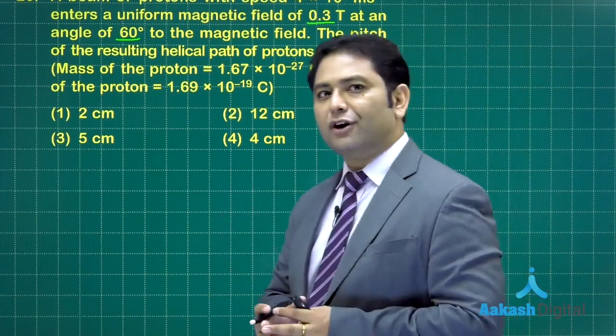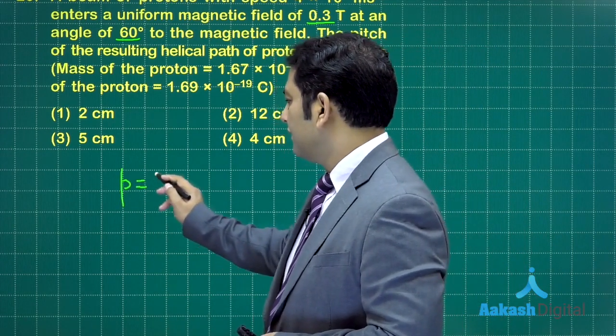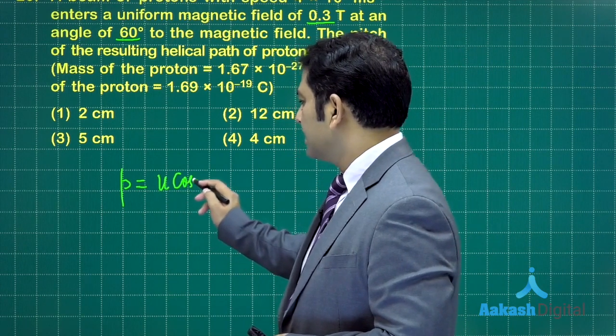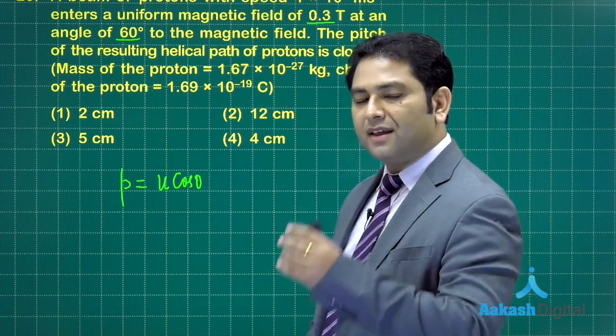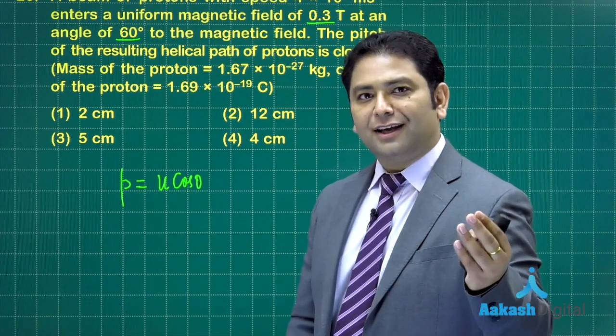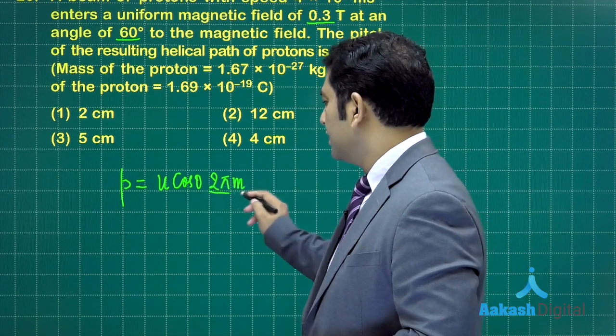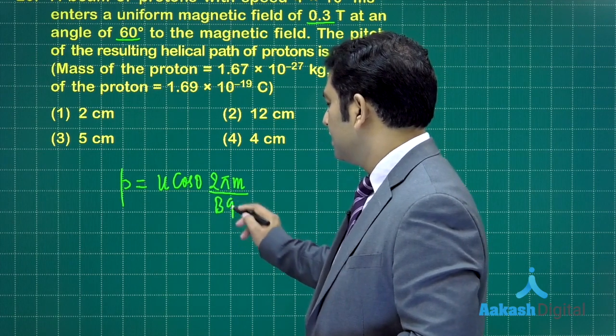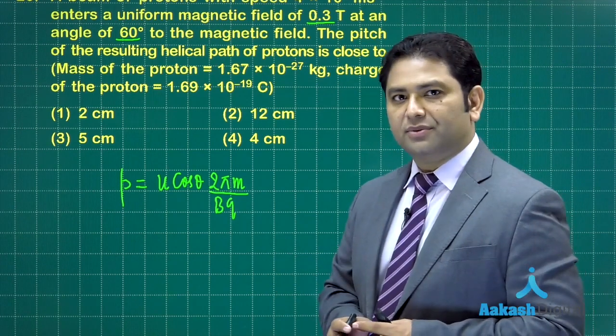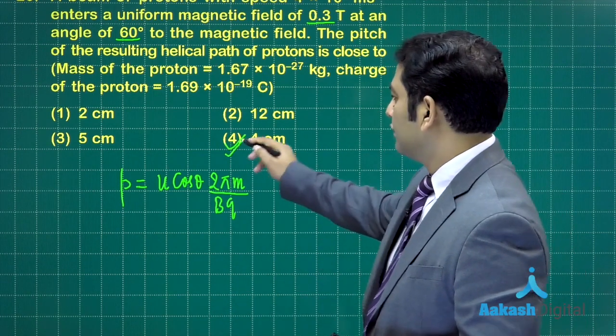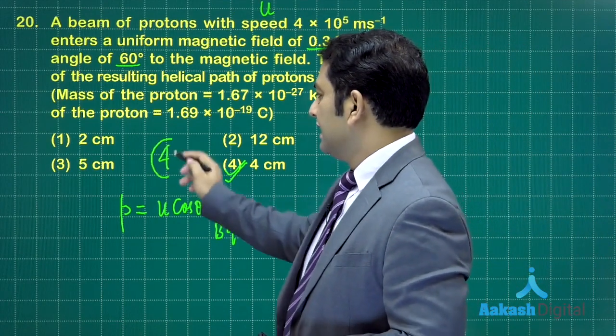This is a very straightforward formula-based question. The component of velocity along the direction of magnetic field is responsible for the forward motion. Pitch is the forward motion covered in one revolution. So all you need to do is 2πm divided by Bq. A little bit of calculation would be required, but option number 4 would be the correct option for question number 20.